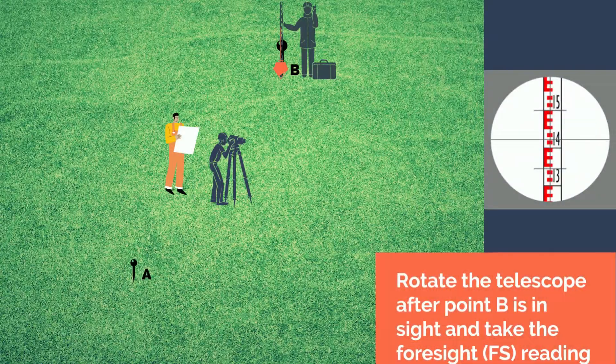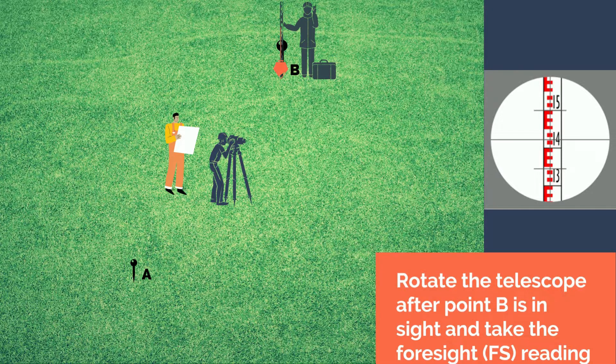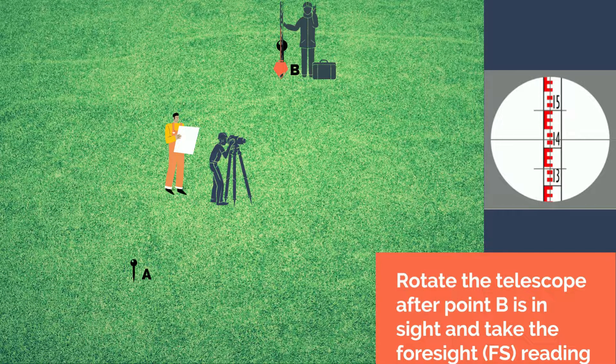After taking the backsight reading of point A, rotate the telescope until point B is in sight. The rodman will then transfer the leveling rod at station B and must hold it with plumb bob alongside to maintain verticality of the rod.